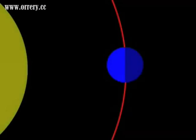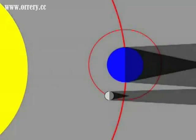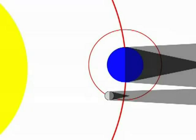As the Earth orbits around the sun, the sun shines on it and on the moon. But the Earth casts its shadow, just like you do when you stand outside on a sunny day.